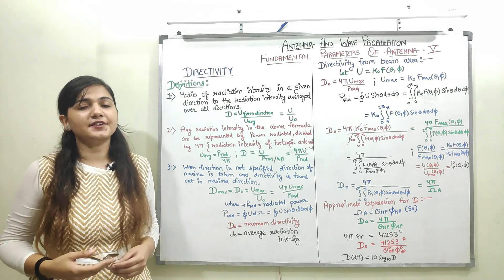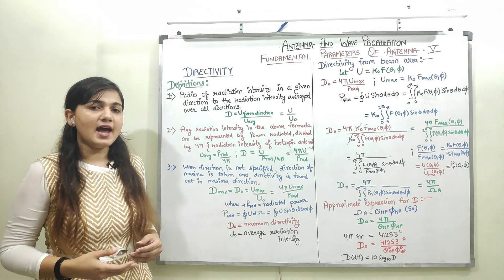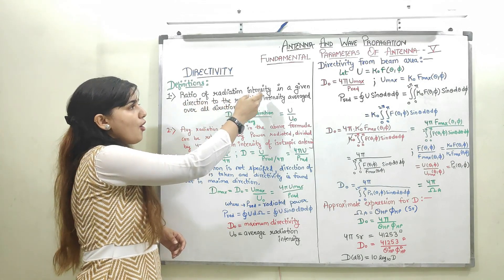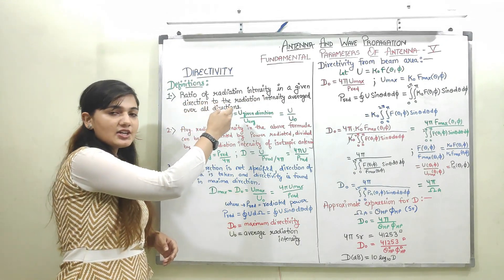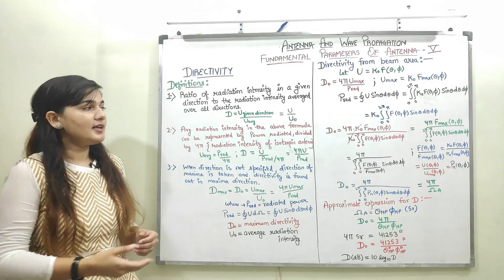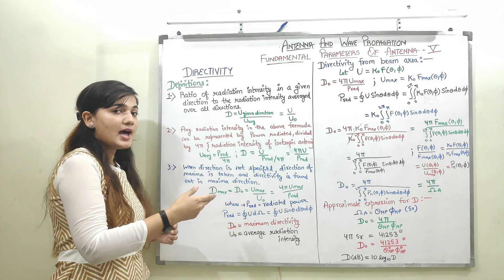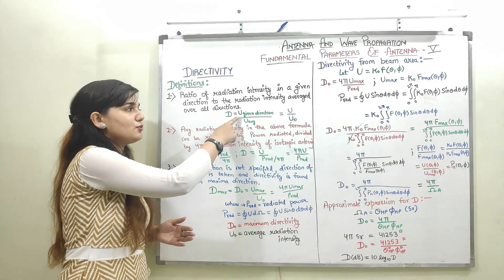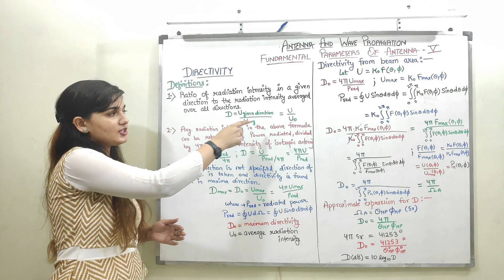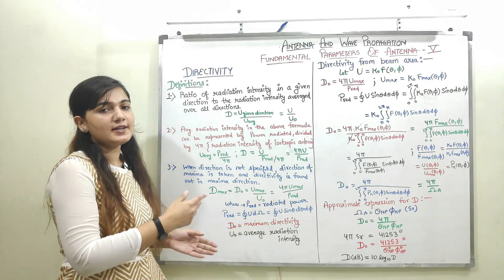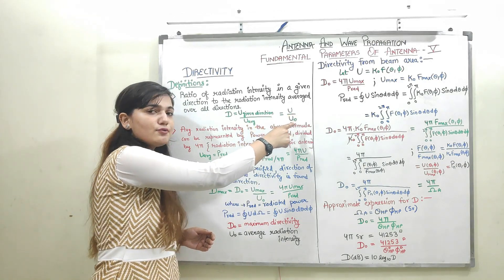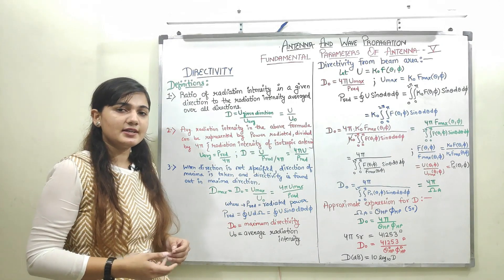Directivity is defined in terms of radiation intensity. The directivity is defined as the ratio of radiation intensity of an antenna in a given direction to the radiation intensity averaged in all directions. I represent radiation intensity with U. So directivity D is equal to U in the given direction divided by U₀, where U₀ is U averaged over all directions.